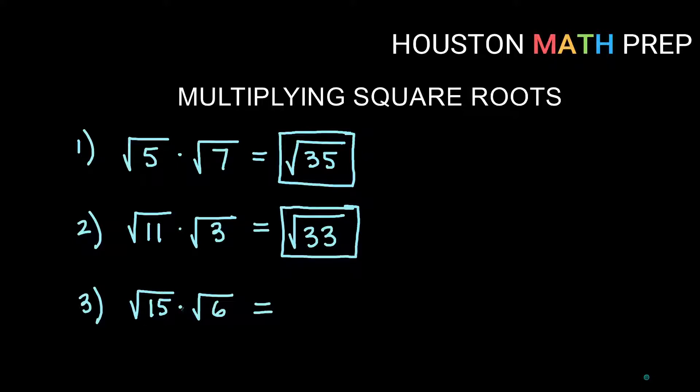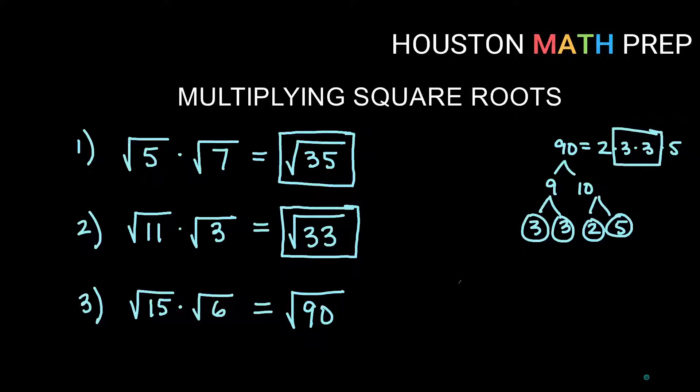Here we have square root 15 times square root 6. 15 times 6 is going to give us 90 underneath the root. Now in this particular one, it turns out that 90 can be simplified. So if you do like a factor tree kind of a method where you say 90 is 9 times 10, and then 9 is 3 times 3, and then you break down 10 into 2 times 5 and you get all the prime factors. So 90 is 2 times 3 times 3 times 5. You'll notice that a pair of 3s there means a 3 can be pulled out.